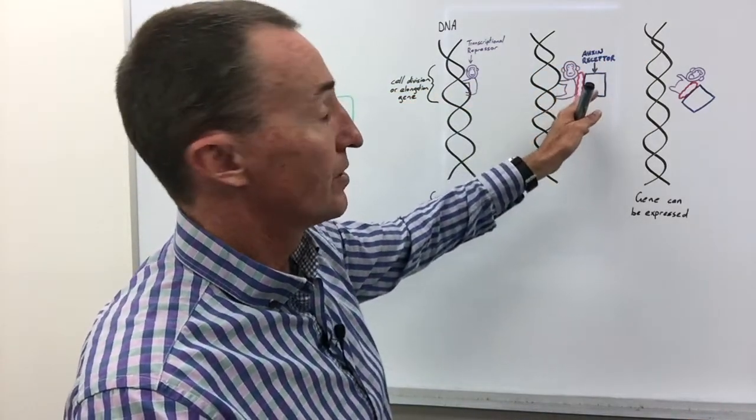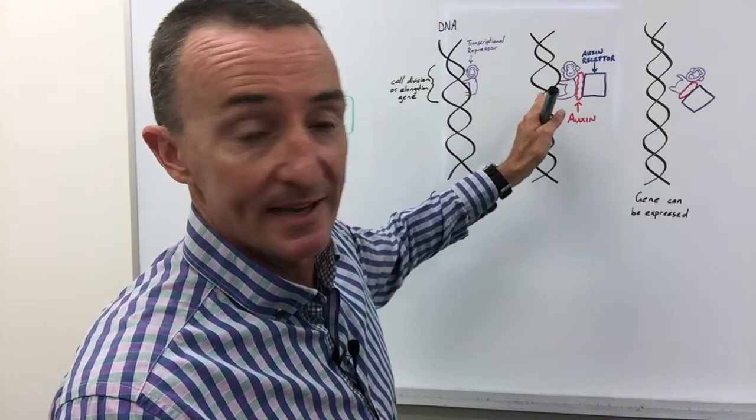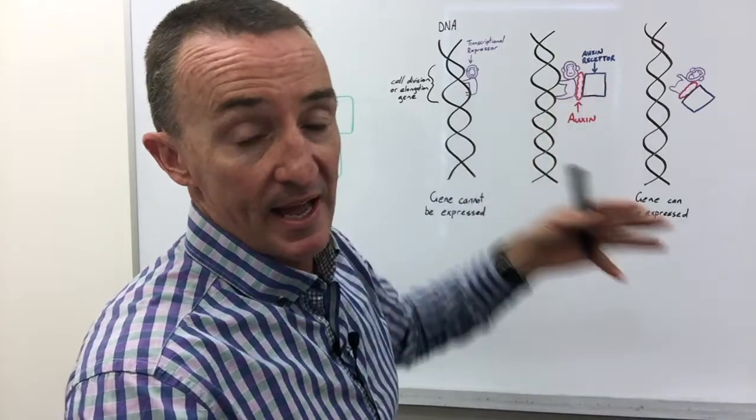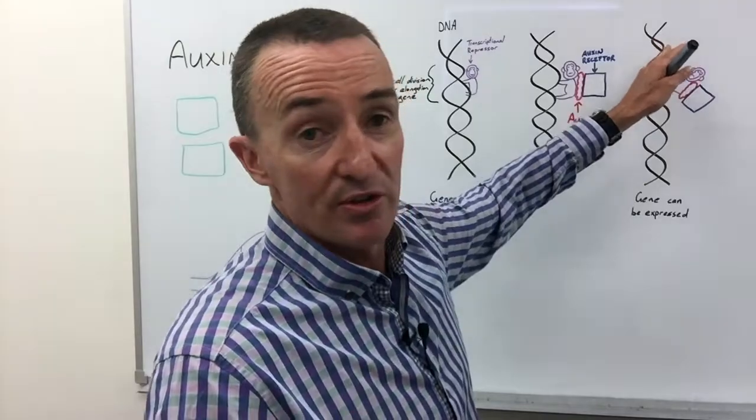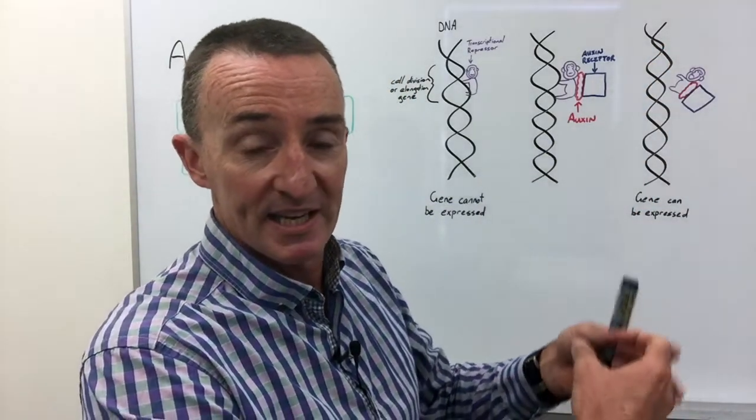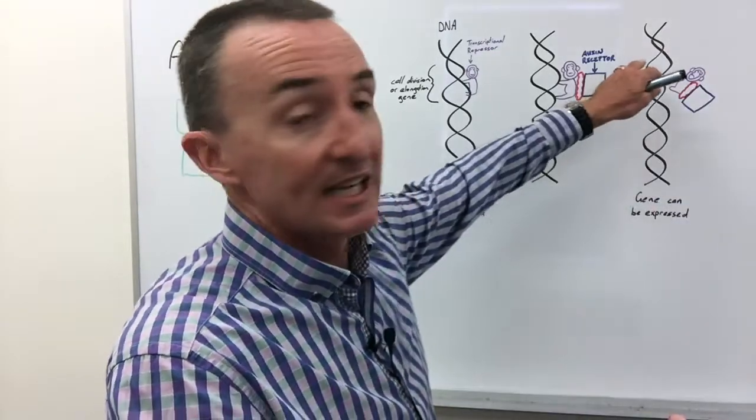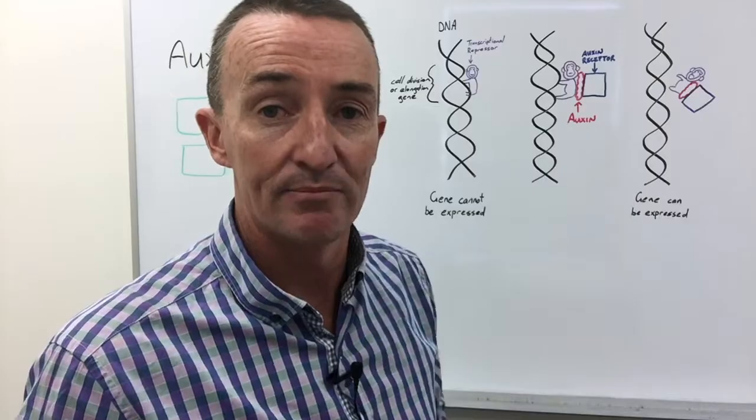The auxin is the glue that binds an auxin receptor onto the monkey. A number of enzymatic processes take place and it removes the monkey off its back. The gene can now be expressed, and so cell elongation and cell division can fire up and the plant can begin to grow.